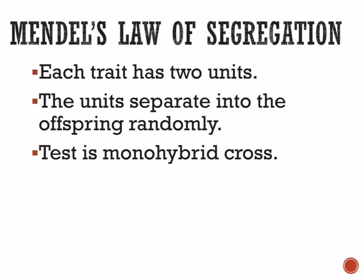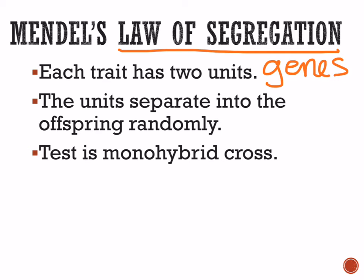Because of Mendel's work, Gregor Mendel came up with two laws of biology — scientific laws. The first is the law of segregation, which says that these heritable units — remember, these are genes — separate into the offspring at random. This is saying that all genes separate independently of other genes. If Mendel's law of segregation is correct, then we should be able to predict the outcome of a cross.